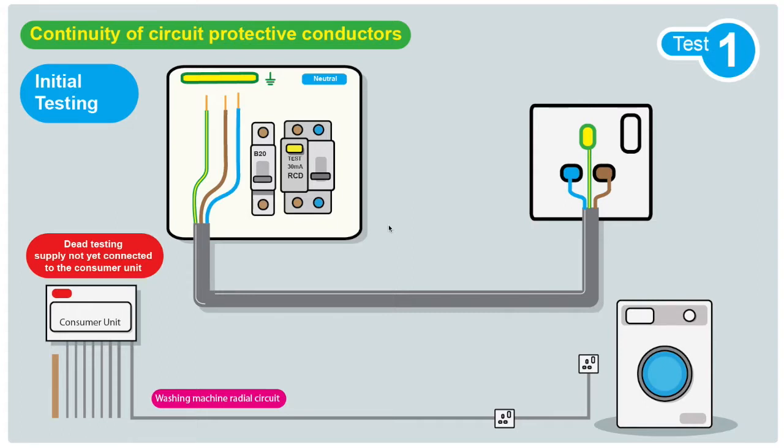This is the first test and it's a very important test because it's confirming that the circuit is protected. The CPC is the protective conductor.